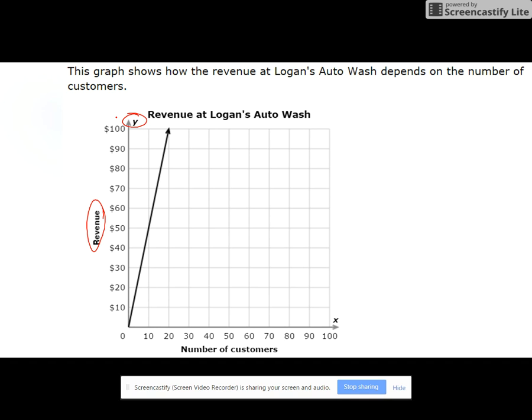So this graph shows how the revenue at Logan's Auto Wash depends on the number of customers. Makes sense. The more people that come, spend money, the more money and revenue he'll make. So let's take a look here.